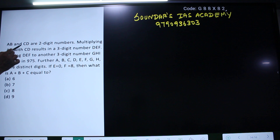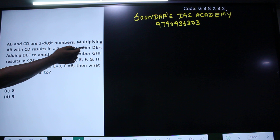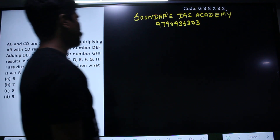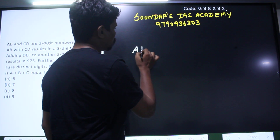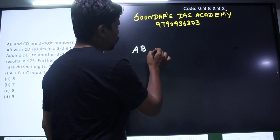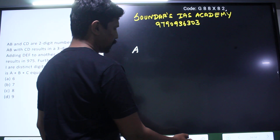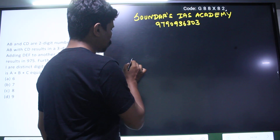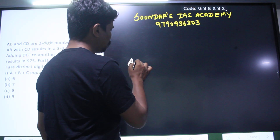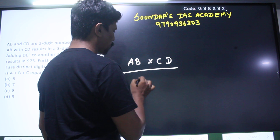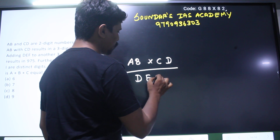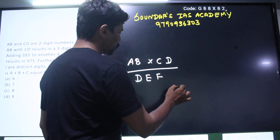AD and CD are 2-digit numbers. Multiplying AD with CD results in a 3-digit number DEF. AD is a 2-digit number, CD is a 2-digit number. When you multiply them, DEF is a 3-digit number.